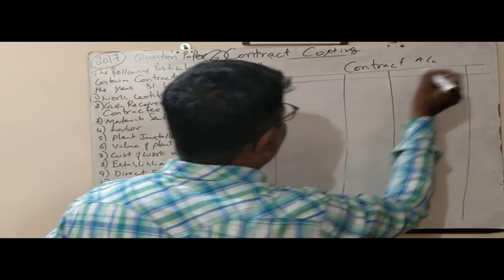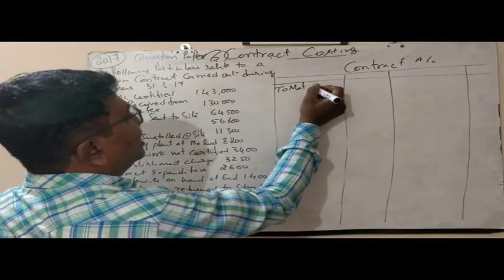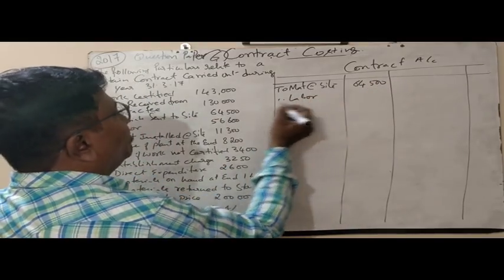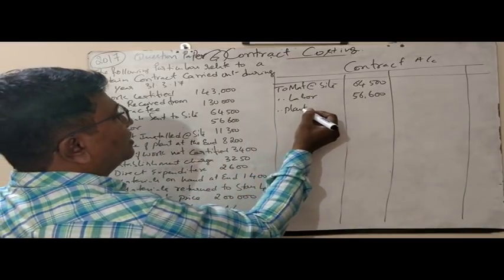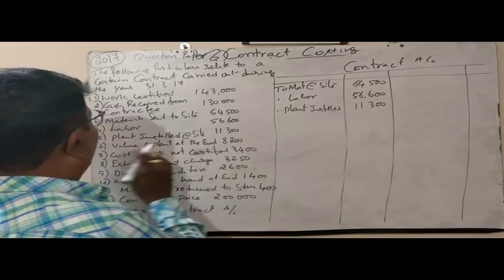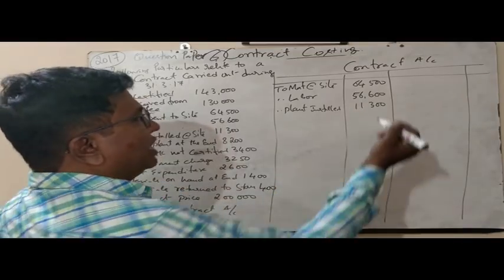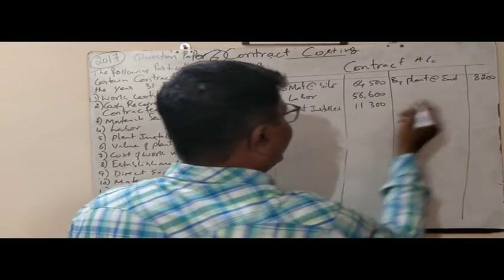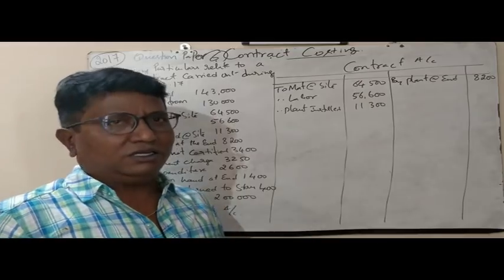In the contract account, the debit side records all expenses and losses. Materials at site are 64,500 rupees and labour incurred is 56,600 rupees. Plant installed is 11,300 rupees. At the end of the year, plant value is 8,200 rupees. So you take 11,300 and deduct plant at the end 8,200 to get the depreciation — when using an asset, its value reduces, and that reduced value is called depreciation.